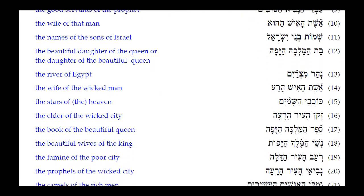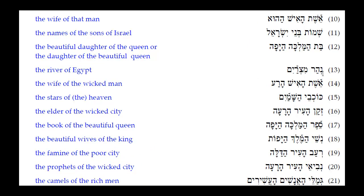Number thirteen: Nahar Mitzrayim. The Sheva under the first syllable of the two-syllable word Nahar is a dead ringer telling you that is a construct noun. So it would be 'the river of Egypt.' Mitzrayim is a proper name and assumes a definite article, so we translate it as 'the river of Egypt' or 'the river of Mitzrayim.'